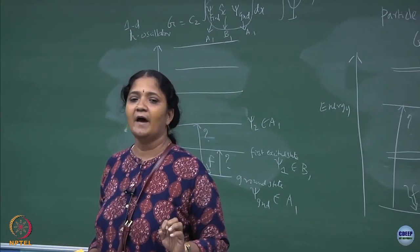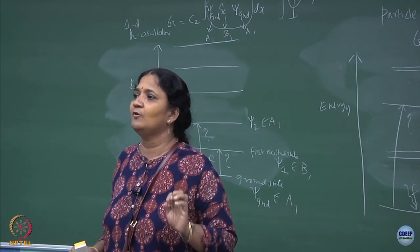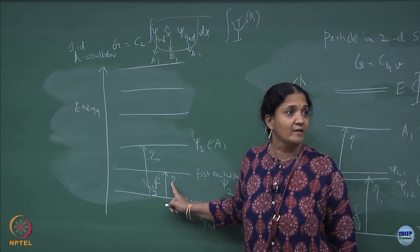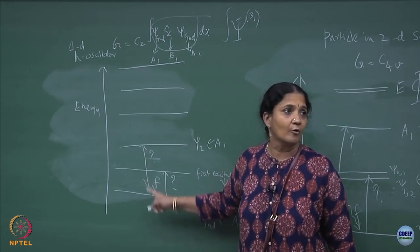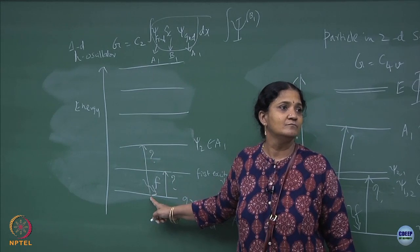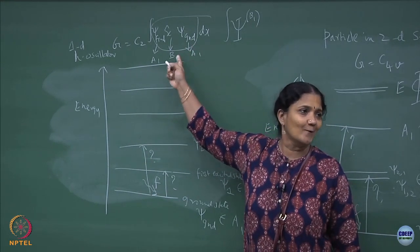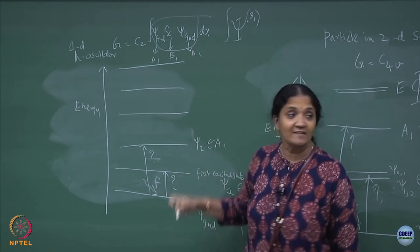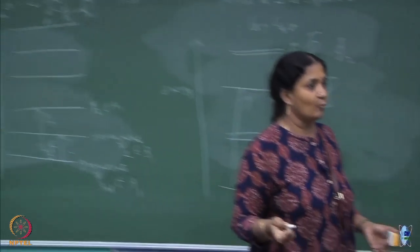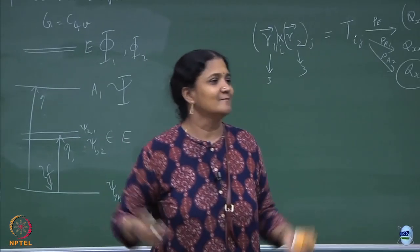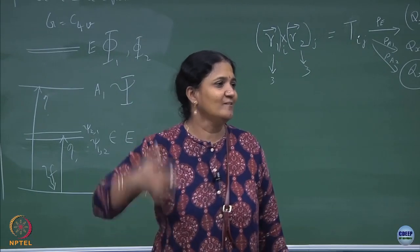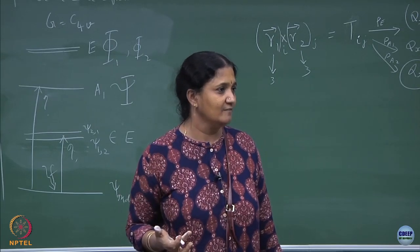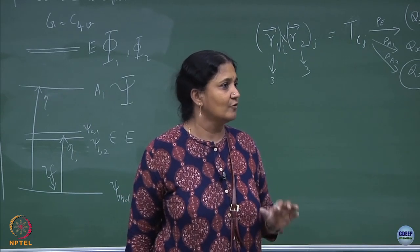I cannot give you a number; I can always say whether it is 0 or non-zero. I can say whether this transition is allowed or forbidden. You know which one is allowed and which one is not allowed in this example. If you go from the ground state to the first excited state it is allowed for the x operator; to go from the ground state to the second excited state is forbidden by odd-even argument. Now we are going to argue from group theory.